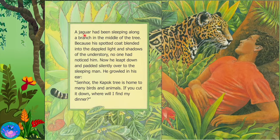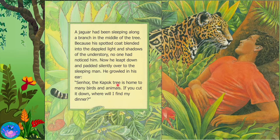A jaguar had been sleeping along a branch in the middle of the tree. Because his spotted coat blended into the dappled light and shadows of the understory, no one had noticed him. Now he leapt down and padded silently over to the sleeping man. He growled in his ear: Senor, the kapok tree is home to many birds and animals. If you cut it down, where will I find my dinner?